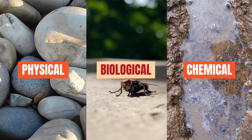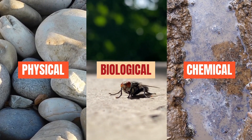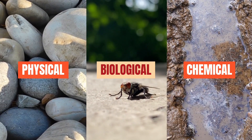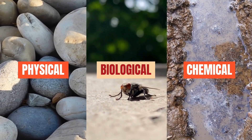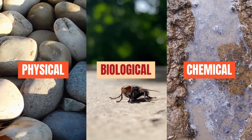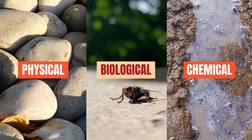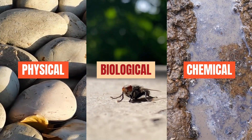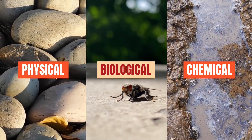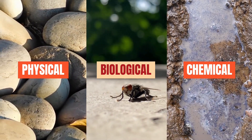Physical contaminants are substances such as broken pieces of glass, fingernails or hair that become part of a food mixture. They may not change or damage the food itself but can create health hazards to the consumers.